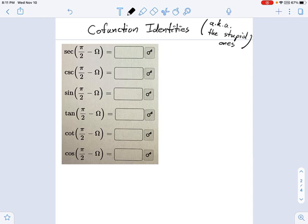Now, if you want to memorize these, that's fine. But I only have so much brain space, and I am not going to fill it up with co-function identities. I'm just going to learn how to reinvent them as I need them.